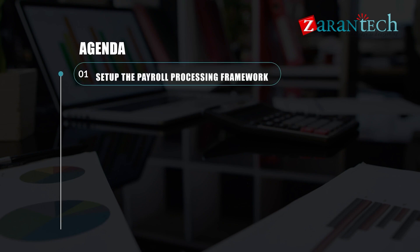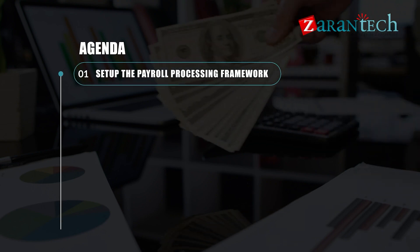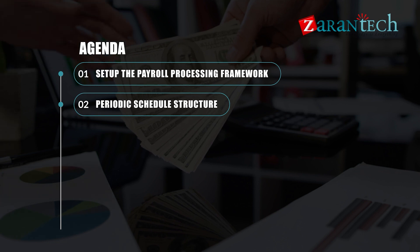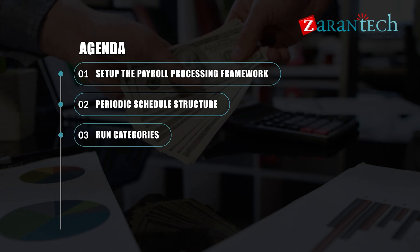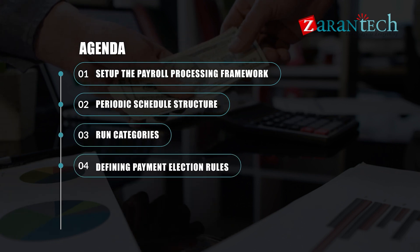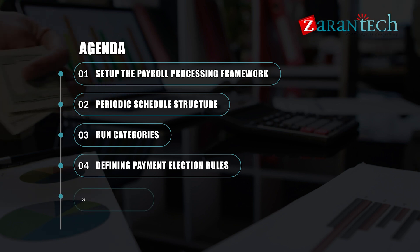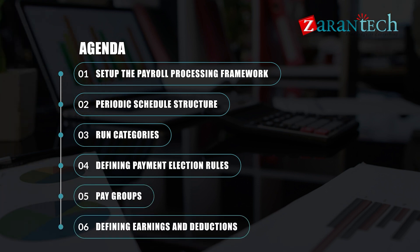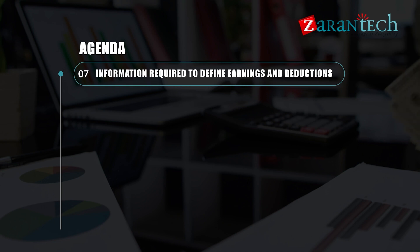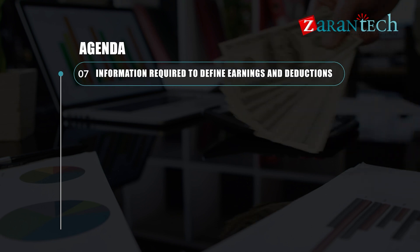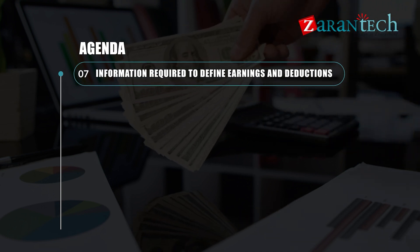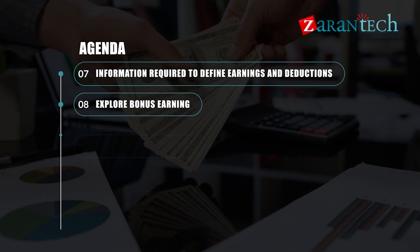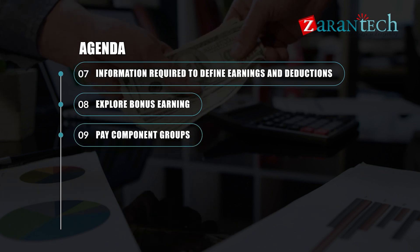Agenda: 1. Set up the payroll processing framework. 2. Periodic schedule structure. 3. Run categories. 4. Defining payment election rules. 5. Pay groups. 6. Defining earnings and deductions. 7. Information required to define earnings and deductions. 8. Explore a bonus earning. 9. Pay component groups.